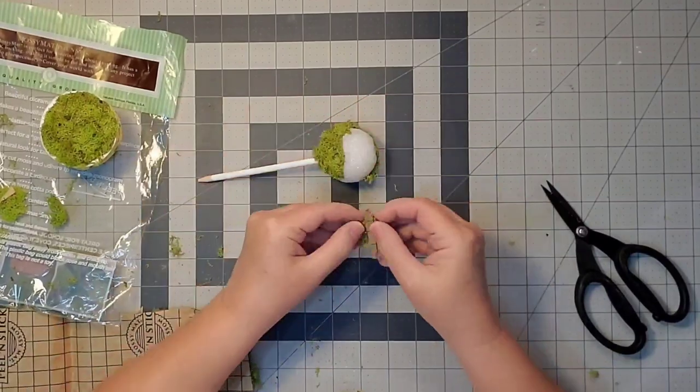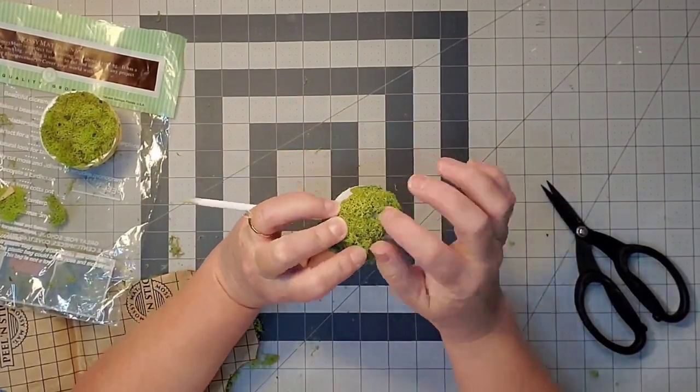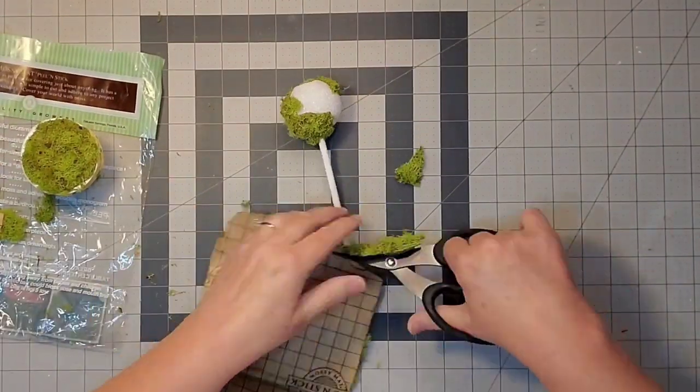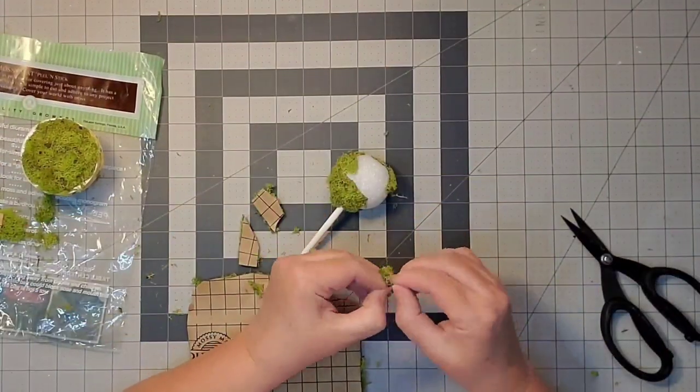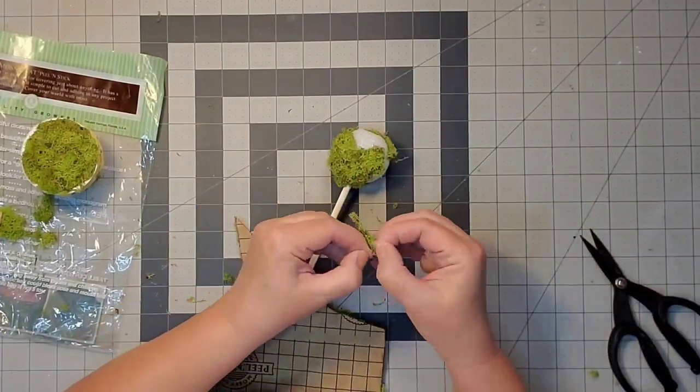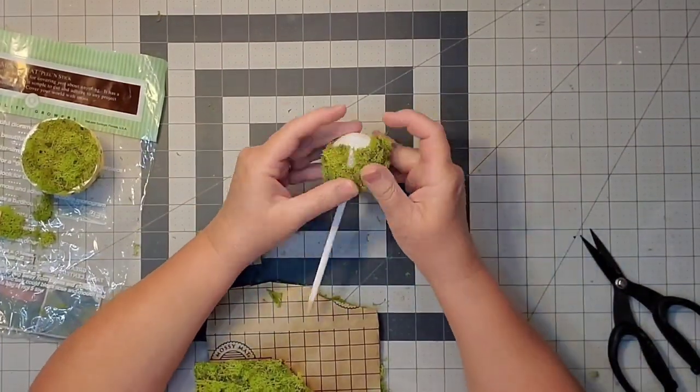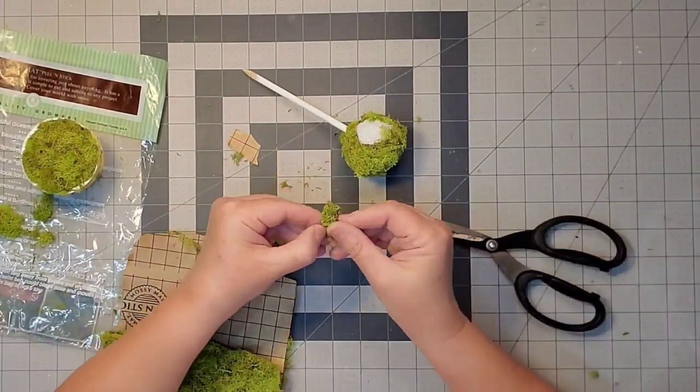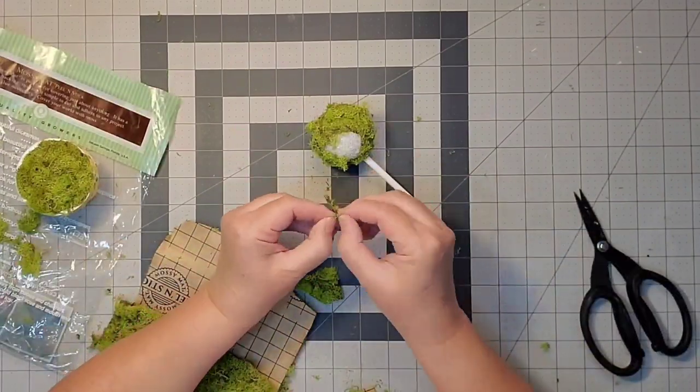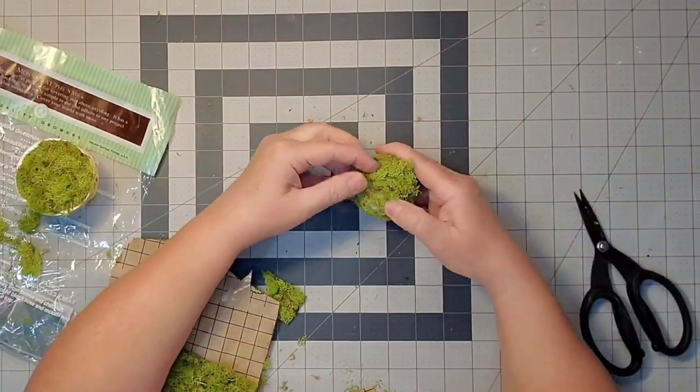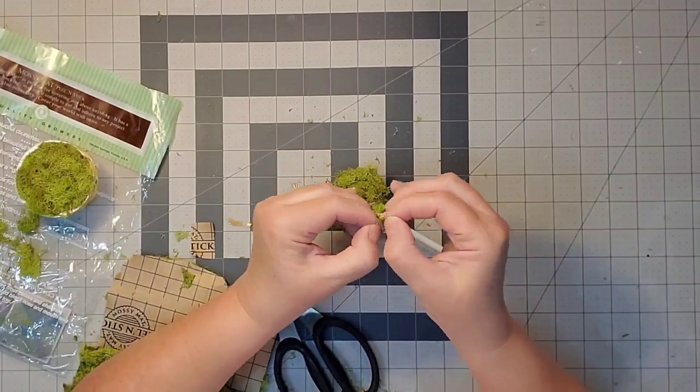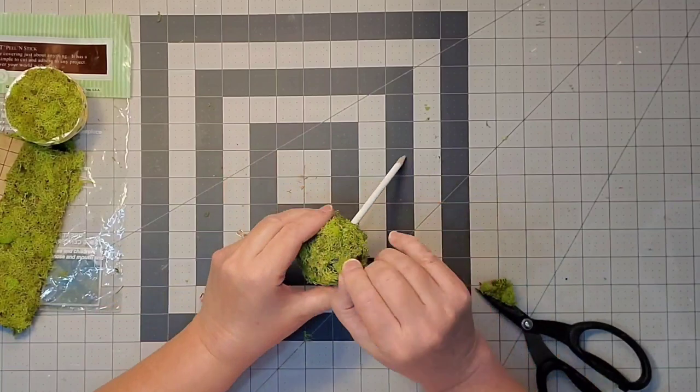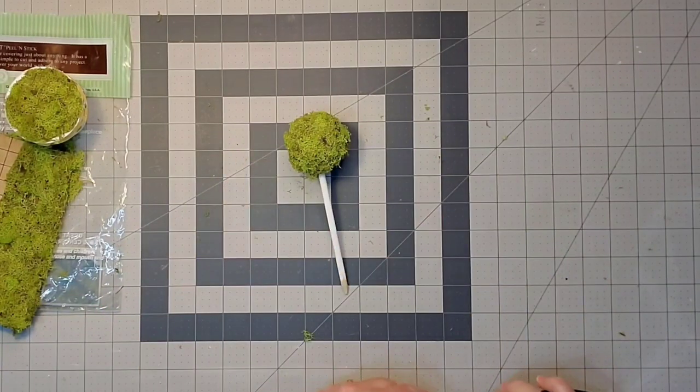Then I stuck my dowel into my styrofoam ball. I'm coming in with little pieces of this mossy mat because it's a round surface, and I want mine to be irregular. I place them next to each other, sometimes overlapping, cutting off pieces and removing the backing until I cover the entire styrofoam ball. Yes, we're making a lemon tree, kind of like a topiary.